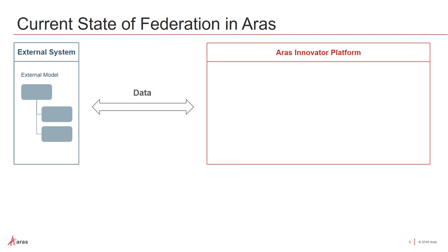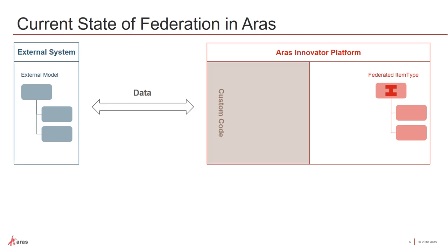Everything can be represented as an external model. We also have some sort of item type in Innovator where you want to get that data from the external system. Right now, getting data from your external system into your ARIS item type requires some custom code — but we're looking to make it a little bit easier.